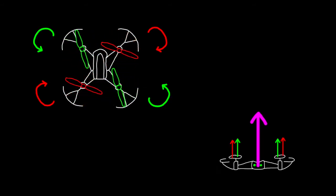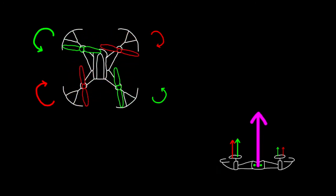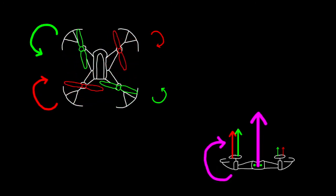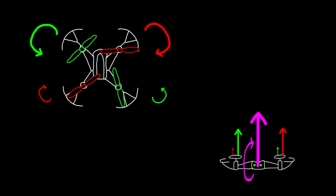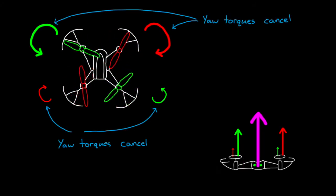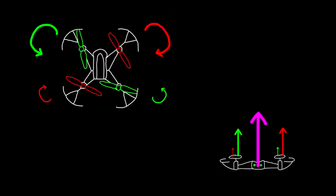Similarly, we can look at roll and pitch. To roll, we decrease one of the left-right pairs and increase the other, causing a rolling torque. And to pitch, we decrease one of the front-back pairs and increase the other, causing a pitching torque. Both of these motions would have no effect on yaw since we're moving counter-rotating motors in the same direction, and their yaw torque would continue to cancel each other out.